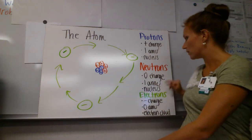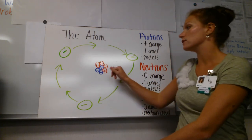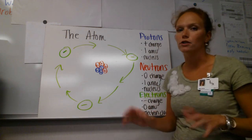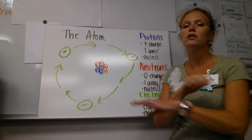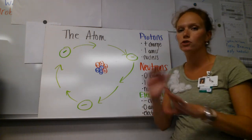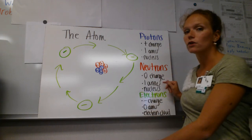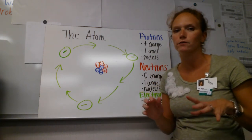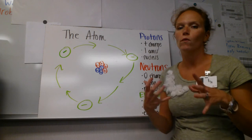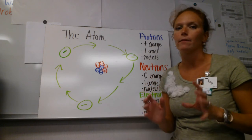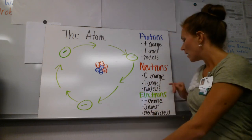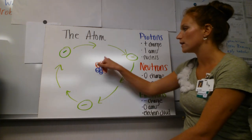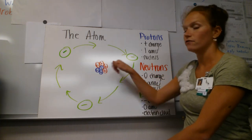Joining the protons in the nucleus is the neutron. The neutron has no charge — it's not positively charged, it's not negatively charged. It is also worth one atomic mass unit, and like the proton, it is located in the nucleus.